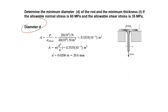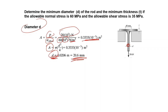The allowable normal stress is 60 megapascals and allowable shear stress is 35 megapascals. For the diameter: the force is 20,000 N and the allowable normal stress is 60 × 10⁶ N/m². From this we find the required cross-sectional area, and from the area we calculate the minimum diameter, which is 20.6 millimeters.